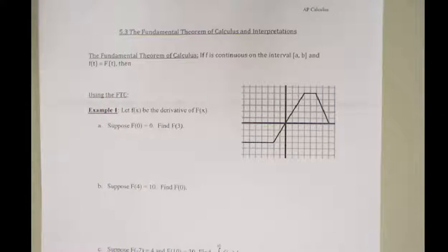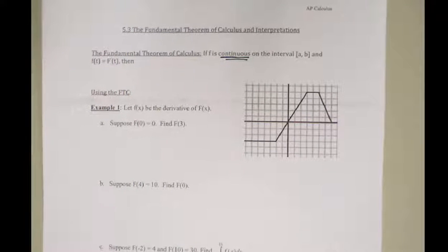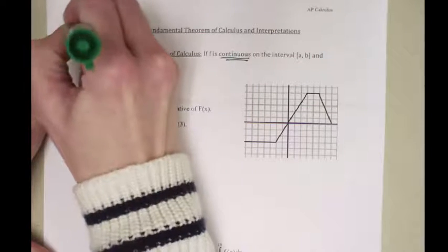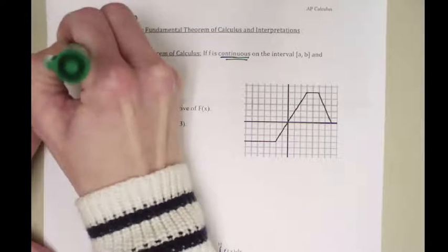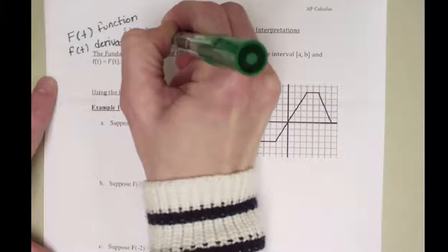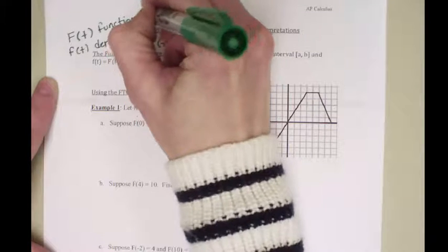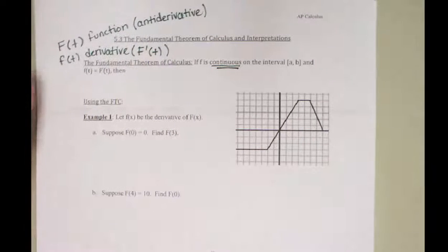So the fundamental theorem basically relates a function and the derivative, or as we've been calling them now, an anti-derivative and a function. So if a function is continuous — it's really important that we deal with continuous functions in calculus — on some interval a to b, and then lowercase f of t is equal to the derivative of capital F of t. So capital F of t is the function, and lowercase f of t is the derivative, so it's capital F prime. We're going to use capital for the function, lowercase for the derivative. Another word you might see is the function is called the anti-derivative — it's the opposite of the derivative, it's the original function.